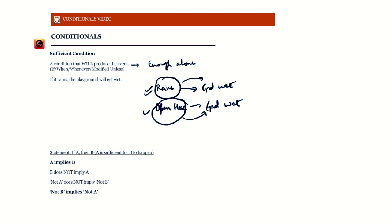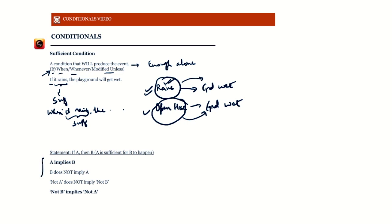Raining may not be the only thing that can make the ground wet, but it is certainly a sufficient one. These sufficient conditions are signaled by the words 'if,' 'when,' 'whenever,' or a modified 'unless.' The thing that appears after 'if' is your sufficient condition — for example, 'if it rains' or 'when it rains' or 'whenever it rains.'